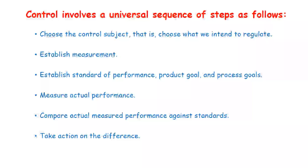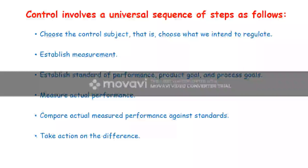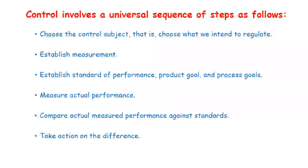In this sequence, first — choose the control subjects: whatever materials they are using are to be chosen properly and inspected regularly. Second — establish the measurements: whatever measurements are there, depending upon the drawings, have to be properly maintained and checked periodically.